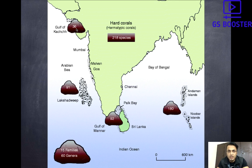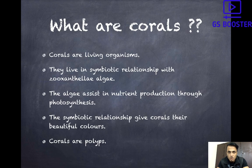You should know this on your fingertips. If there is a question regarding how global warming is affecting coral reef formation, if you know all four regions in India where coral reefs are found, you can add 1 to 1.5 extra marks. So remember: one — Andaman and Nicobar Islands, two — Lakshadweep, three — Gulf of Mannar, and four — Gulf of Kutch. Now, what are corals?